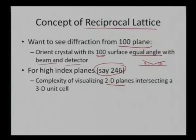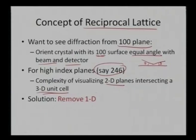What I have are 2D planes which are intersections of a 3D unit cell, which creates much more complexity. If I want to visualize the 2 4 6 plane, I can remove one dimension and see everything in 2 dimensions, which is more comfortable. Once I remove one dimension I can see everything in reciprocal lattice spacing and form the same crystal in a reciprocal lattice — I remove one dimension and have a much simpler view for analysis.